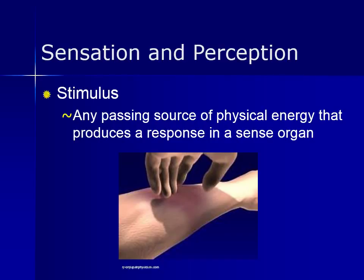A stimulus might include anything that can be seen, touched, tasted, smelled, or heard. This is important when it comes to understanding sensation and perception, as they play two complementary but different roles in how we interpret our world.